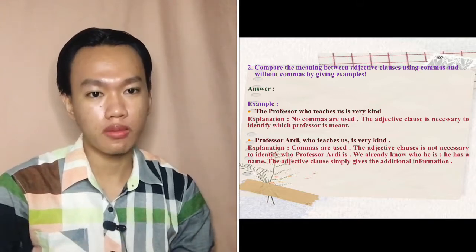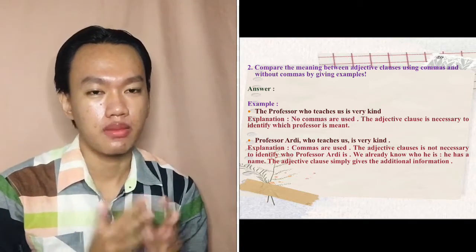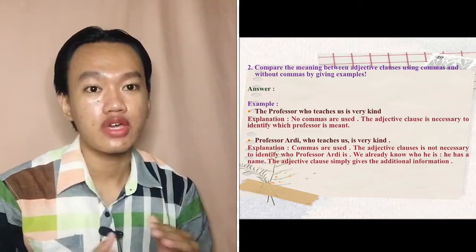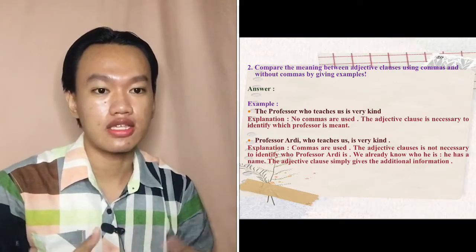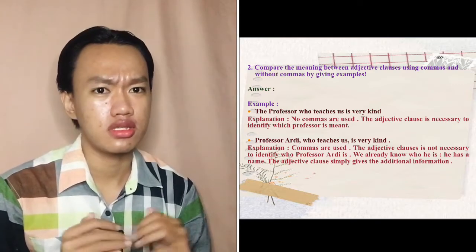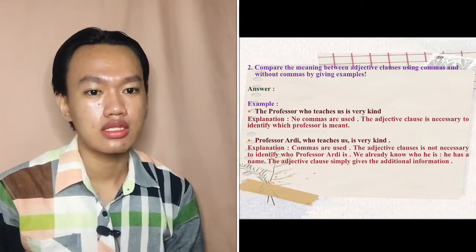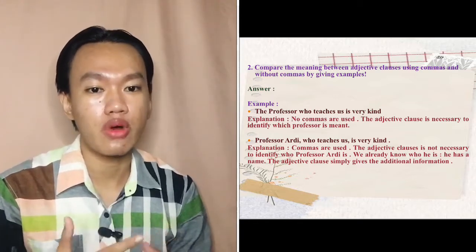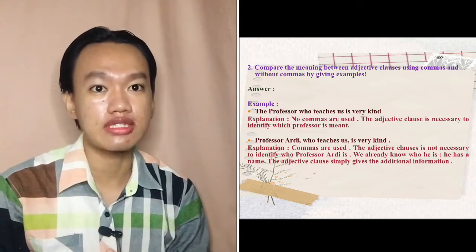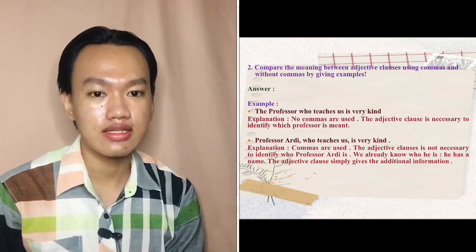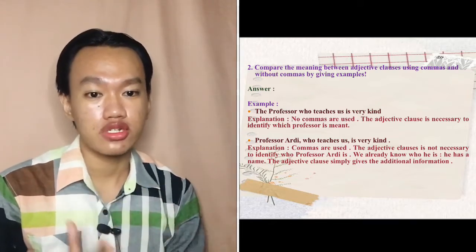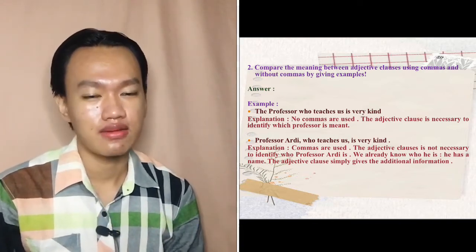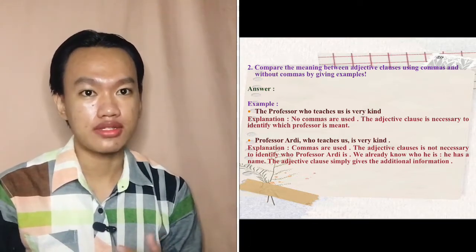The second question is: compare the meaning between an adjective clause using commas and without commas by giving examples. My answer — first example: 'The professor who teaches us is very kind.' My explanation: no commas are used; the adjective clause is necessary to identify which professor is meant. Second example: 'Professor Rd, who teaches us, is very kind.'